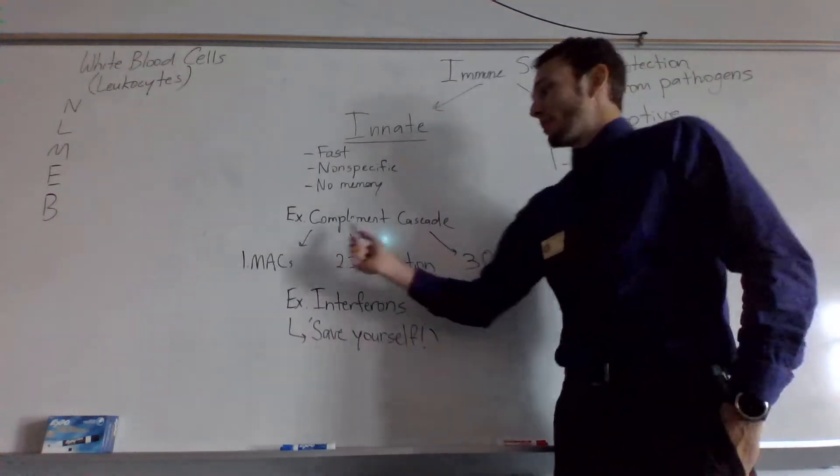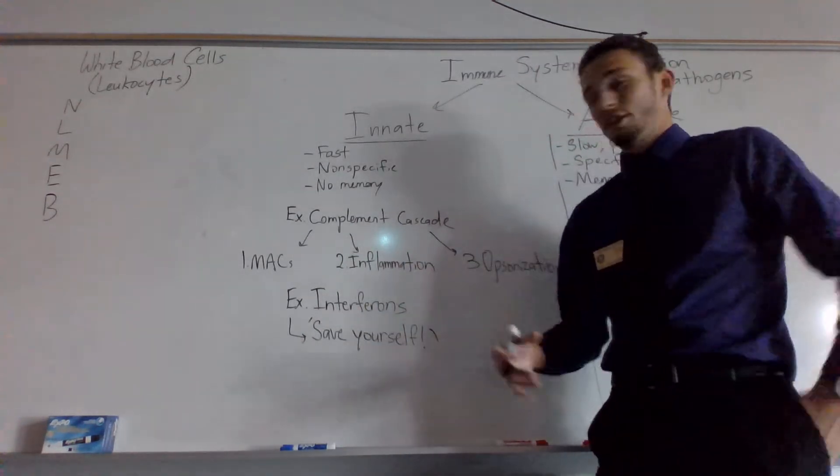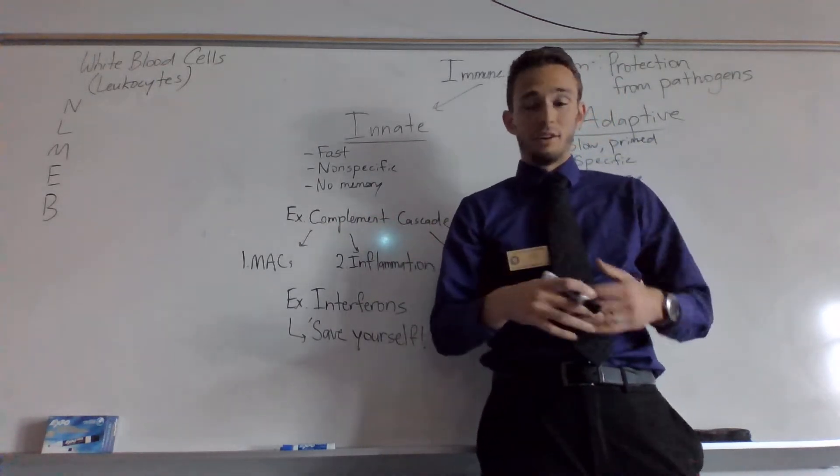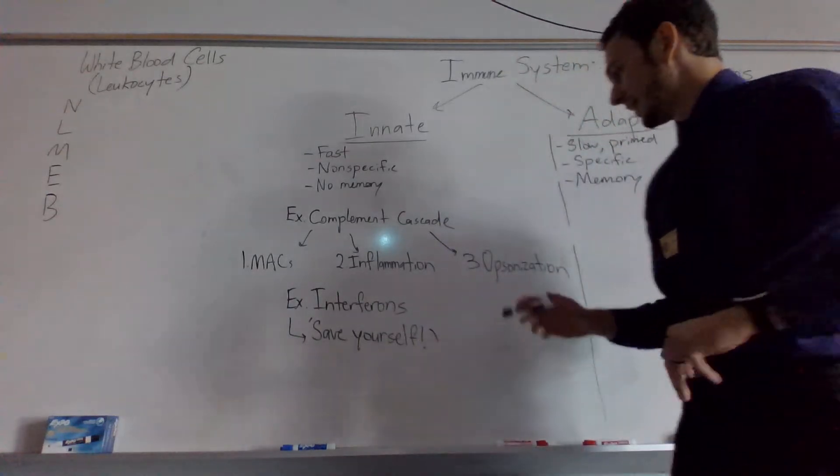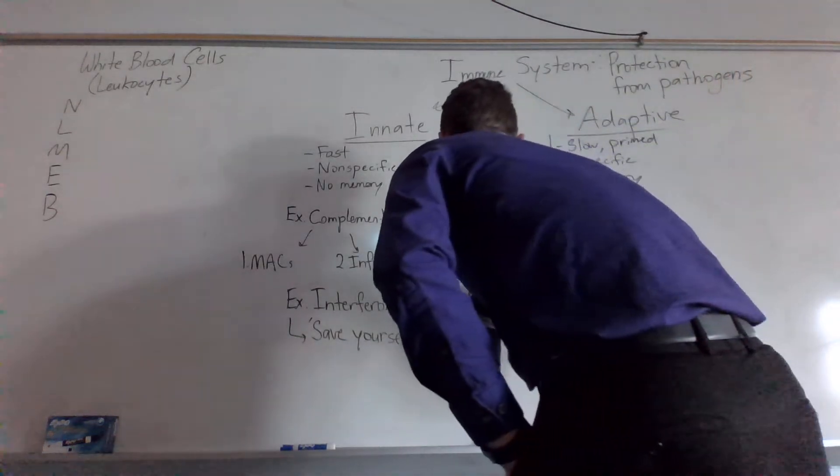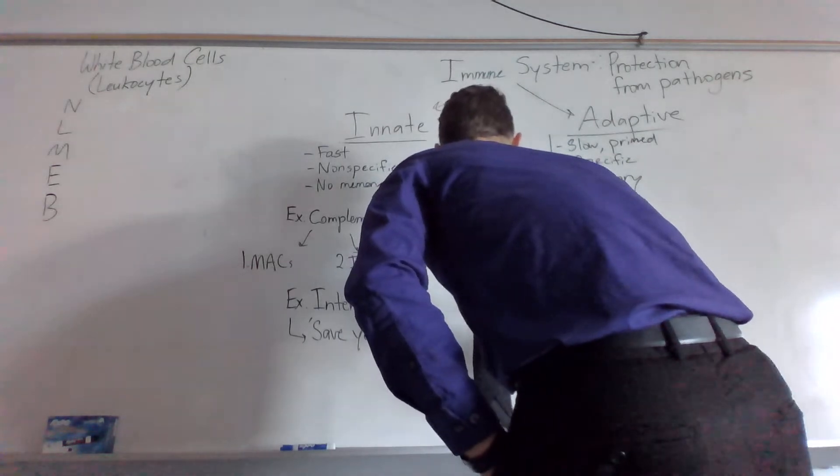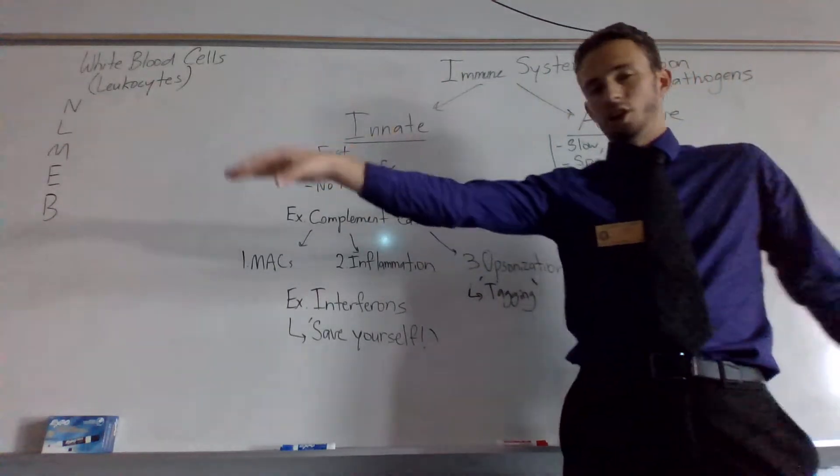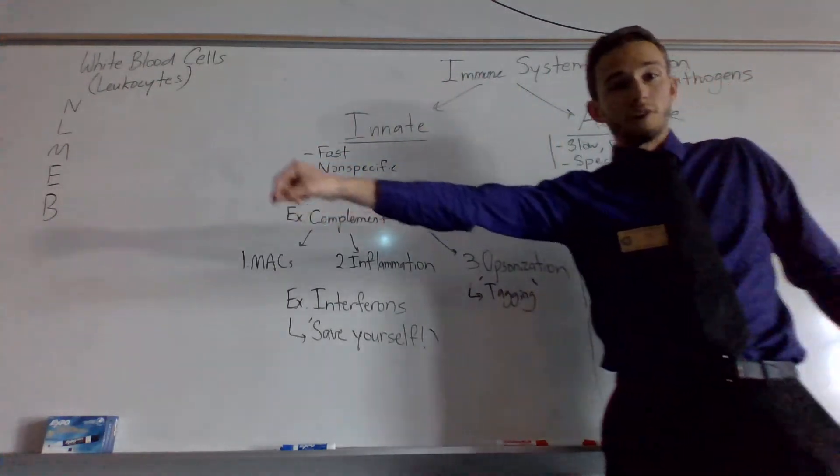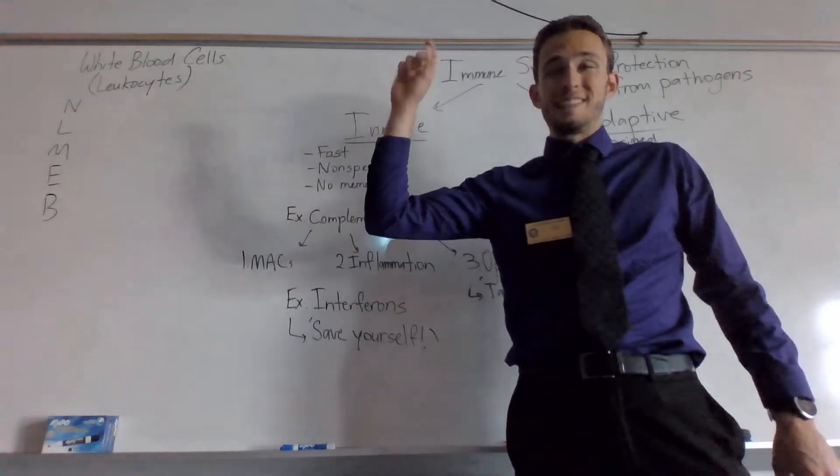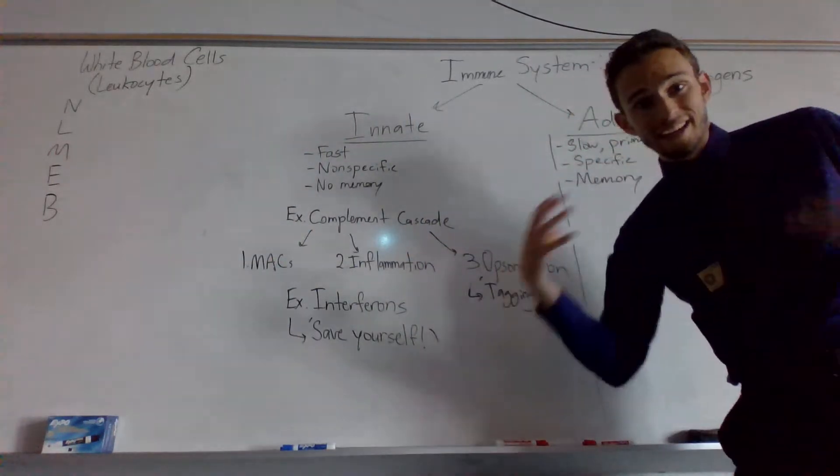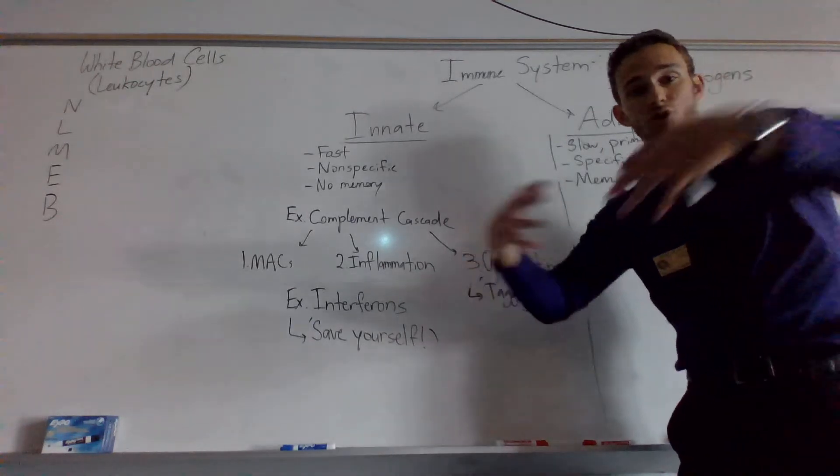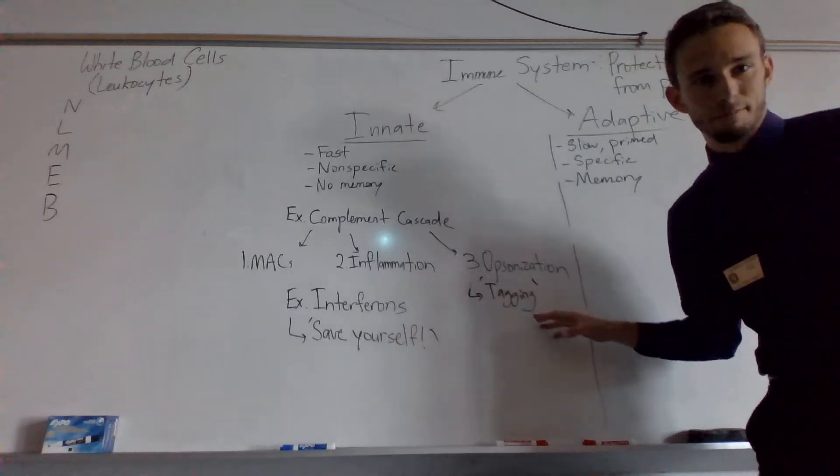Second thing that could happen is inflammation. So inflammatory chemicals will be secreted from the complement cascade, and there will be inflammatory molecules that basically stimulate a further immune response. And then lastly, opsonization. Opsonization is molecular tagging. These proteins will basically put a tag on like a virus or bacteria, and it will tag it for destruction. Specifically, it's tagging it for eating by macrophages. Big eater cells will see those tags and engulf them.